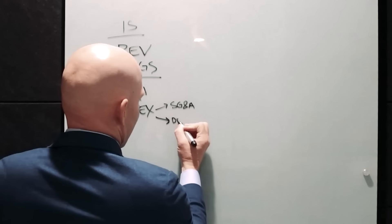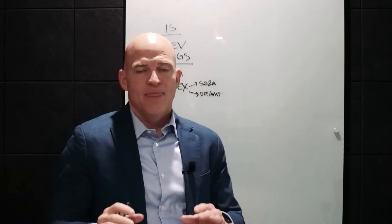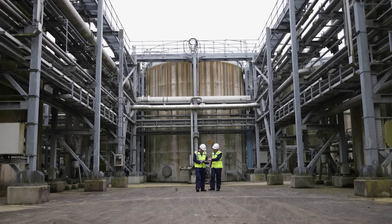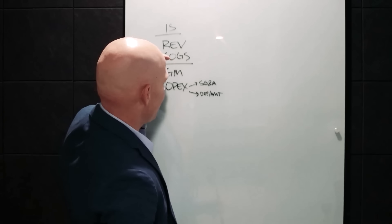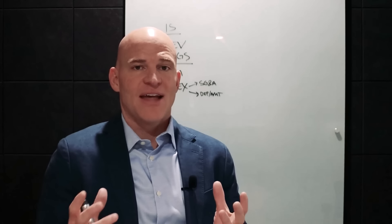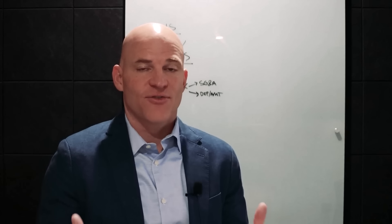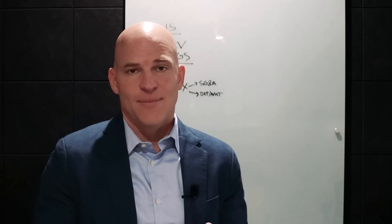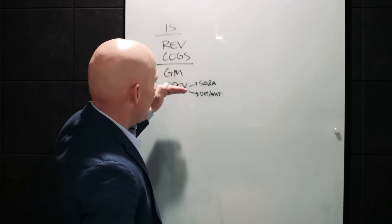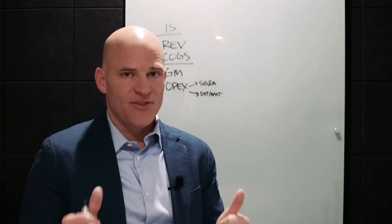You also may have depreciation and amortization rolled up underneath OPEX. Now every company is different. For example, there are some businesses in the oil and gas industry, and they may have their depreciation and amortization listed up above in cost of goods sold. There's some flexibility as it pertains to GAAP, which stands for Generally Accepted Accounting Principles in the United States, which provides guidance and standards for companies when they are putting together their financial statements. So some businesses may record things up above, and some may record it down below. As long as it meets GAAP standards, it's all good.